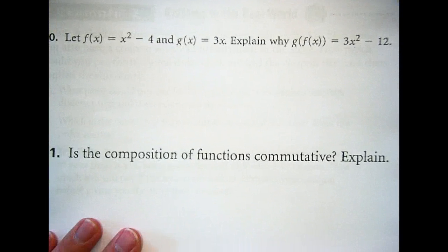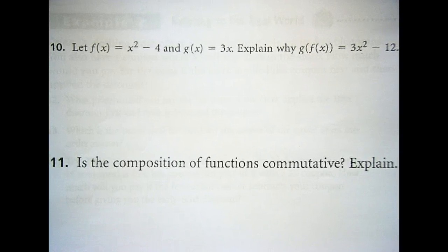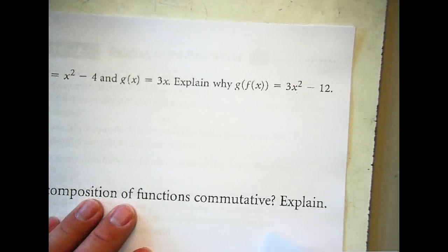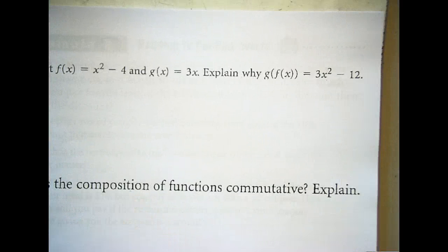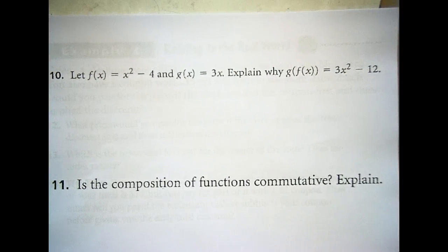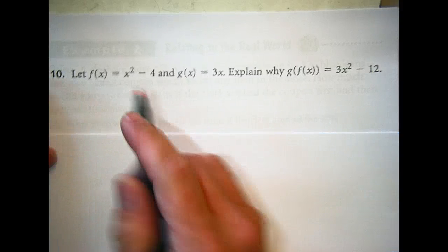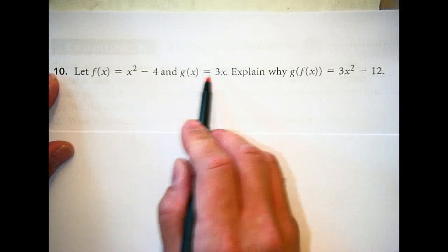Let's take a look at number 10. Let f(x) = x² - 4 and g(x) = 3x. Explain why g(f(x)) = 3x² - 12. This is the one I messed up third period, why I'm having to record right now. So we totally messed this one up. How many have done this one? How many got confused on it? How many just didn't get to it?